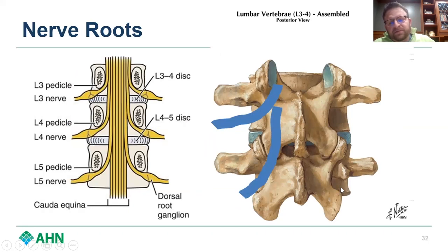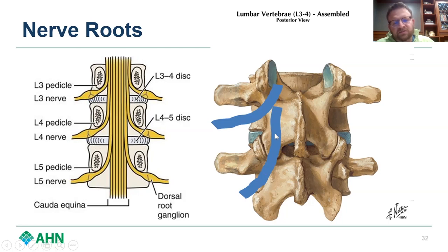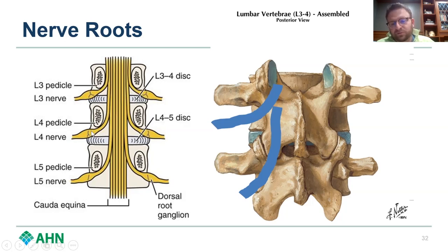Now thinking about nerve roots and their relationship here — spinous process, lamina, PARS interarticularis, facet, facet. Exiting nerve root, traversing nerve root coming down. When we talk about the classic paracentral disc herniation, we talk about traversing nerve root compression. You can see where that far lateral disc herniation is going to get the dorsal root ganglion, and the paracentral disc herniation is going to get that traversing nerve root, the nerve root lining up to exit the spinal cord.